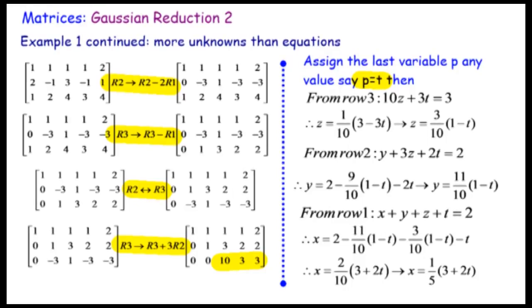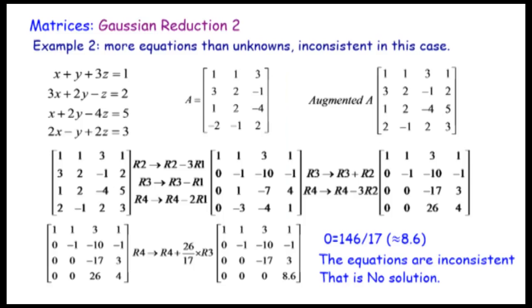So we now have a redundant case — an infinite number of solutions. Whatever value I select for p, I'll get a different x, y, and z. So we have an infinite number of solutions here. Now let's continue on to Example 2, where we've got more equations than unknowns: one, two, three, four equations and three unknowns.